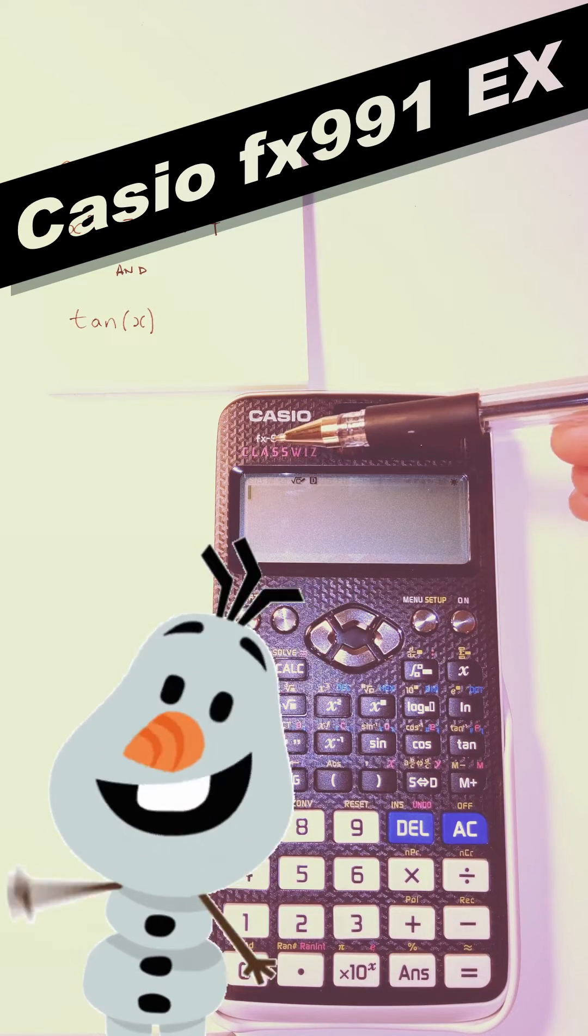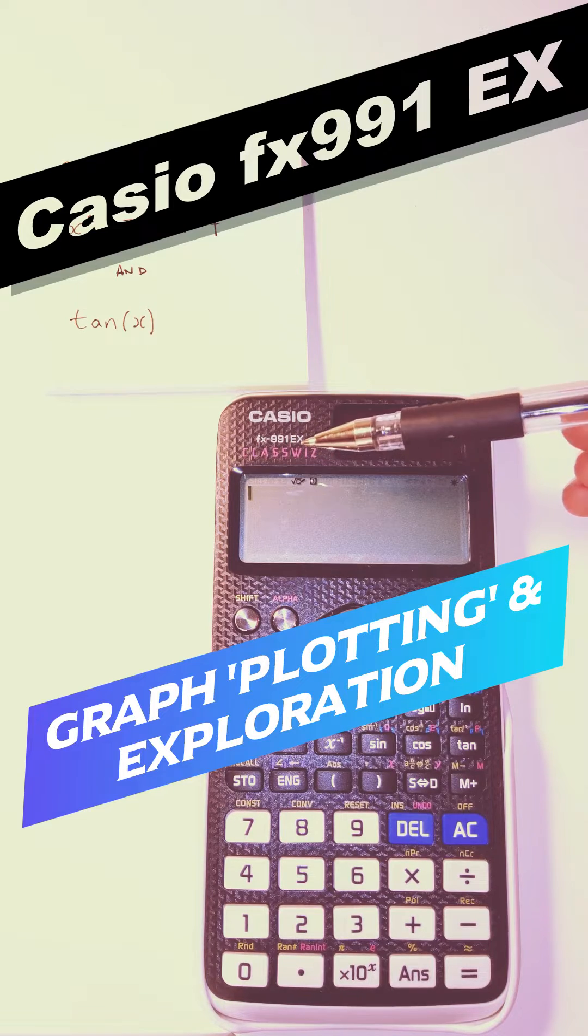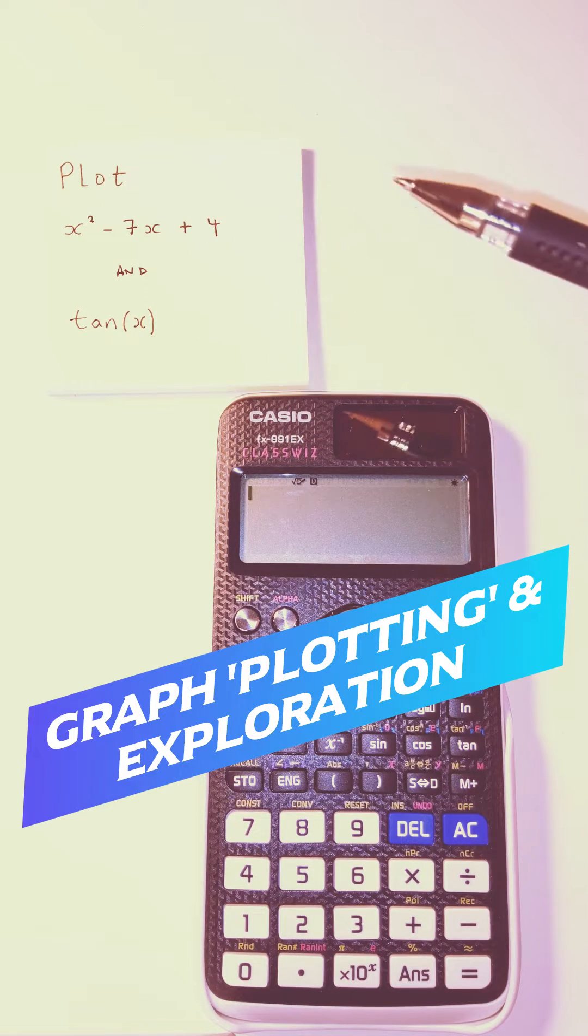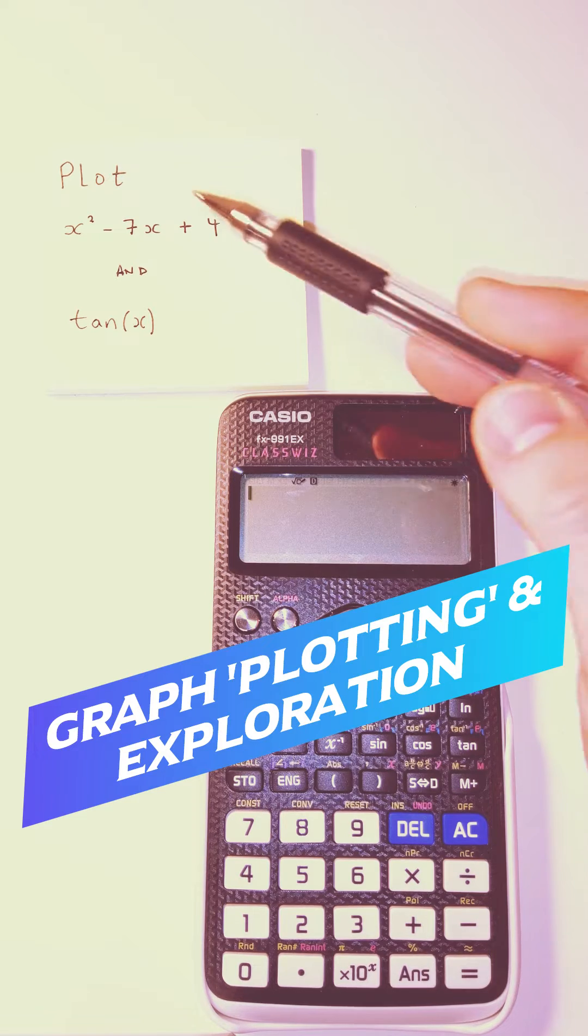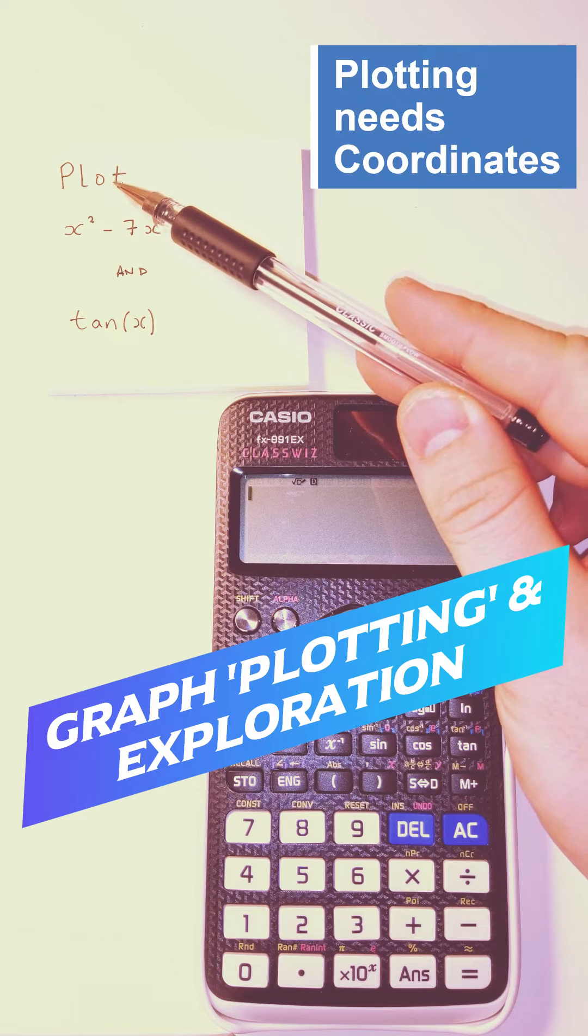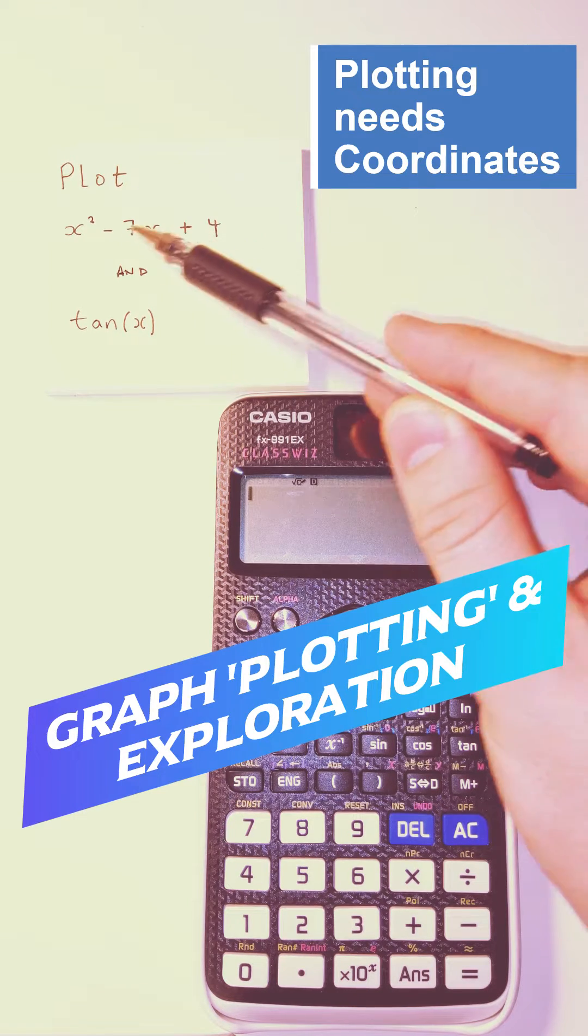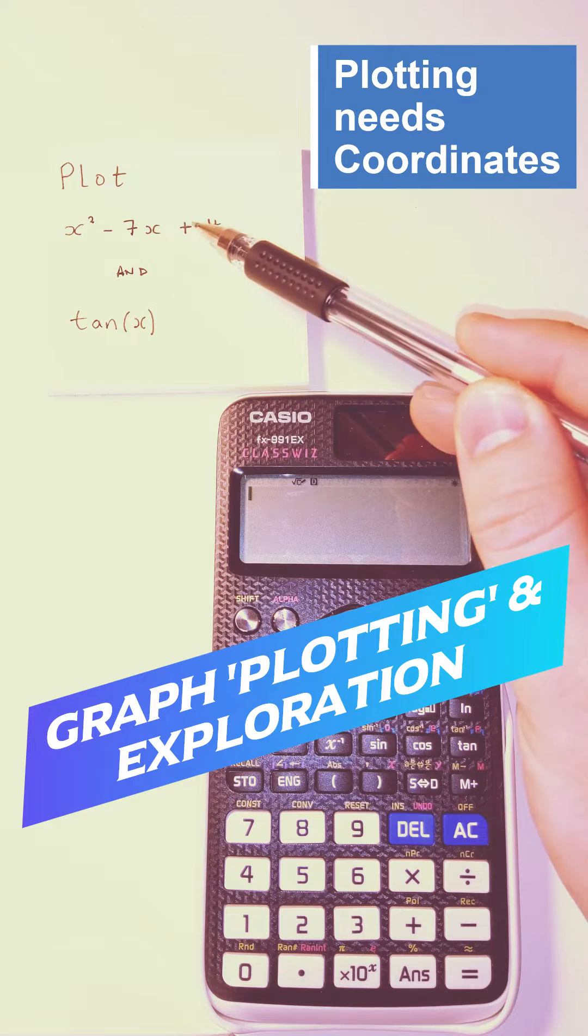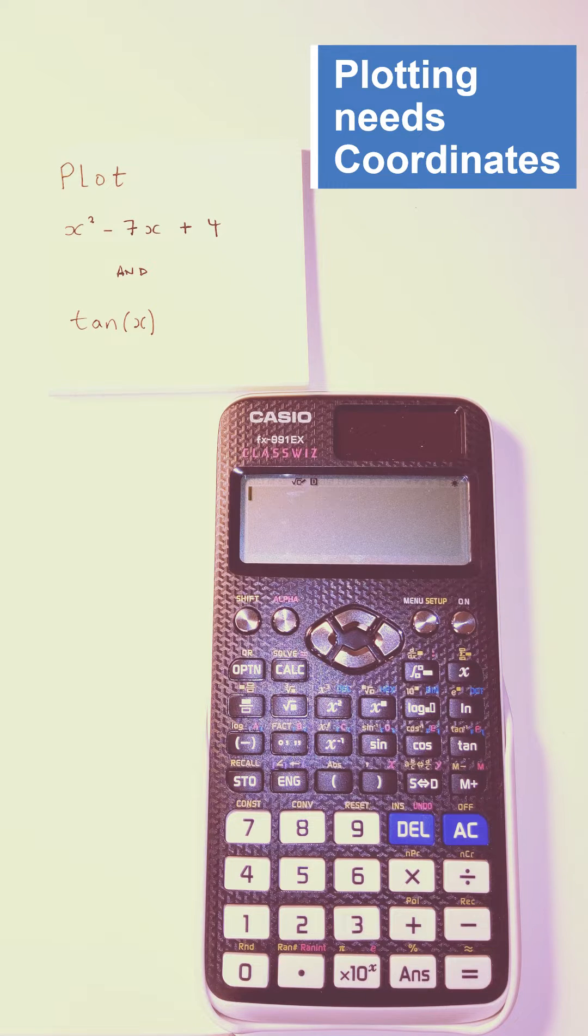Okay, today we're looking at the Casio FX991EX and we're going to be doing a plotting exercise. If you wanted to plot a graph, you know that plot means exact, so you're going to need a set of coordinates in order to do this. You could test individual values and draw a table on your page, but this calculator does something really good and finds it for you. So let's have a look at how we do that.